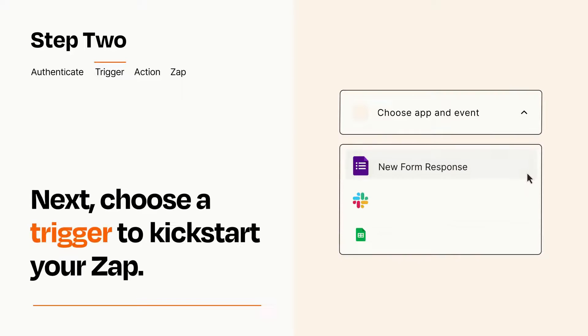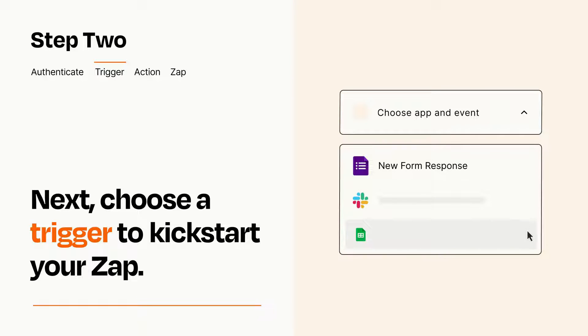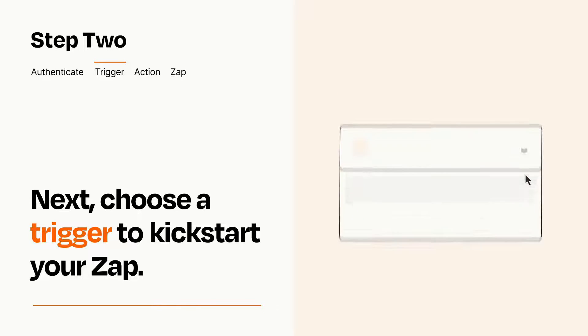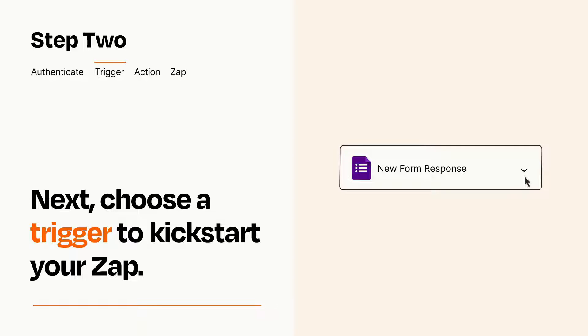Now let's set up your trigger, which is the event that starts your Zap. Pick the trigger event that you want from the list. When you set up this step, your Zap will pull in test data from your trigger app that you'll see later when setting up your action app.